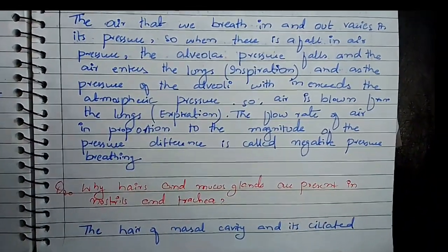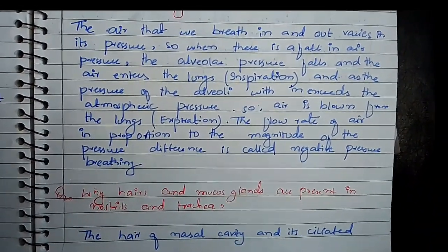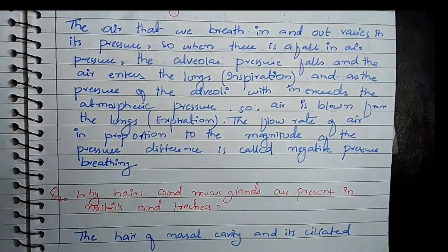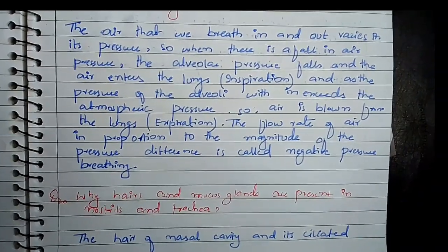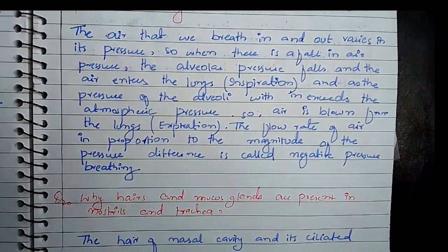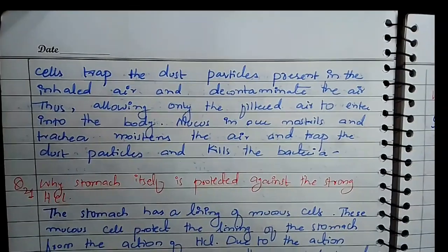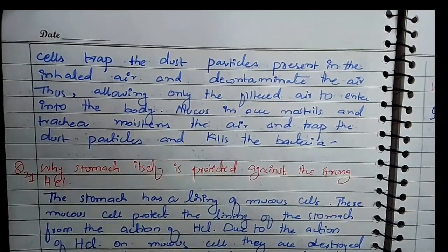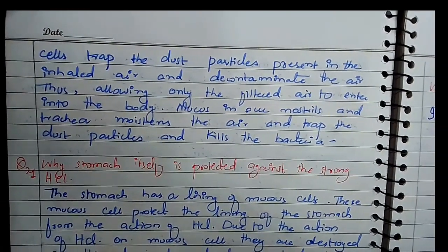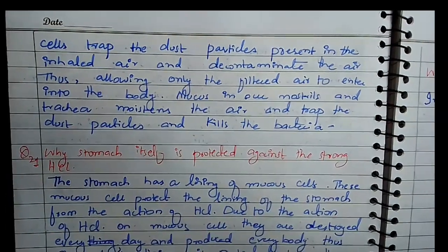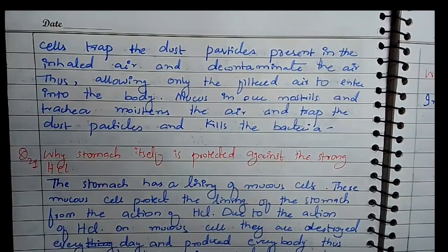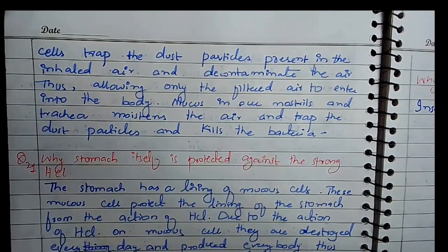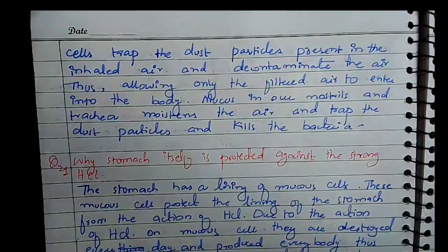Question number 20: why are hairs and mucus glands present in nostrils and trachea? Hairs present in the nasal cavities are ciliated and filter the inhaled air. They trap dust particles and decontaminate the air entering the body. Mucus serves the same function — it traps dust particles, kills bacteria, and adds moisture to the air.